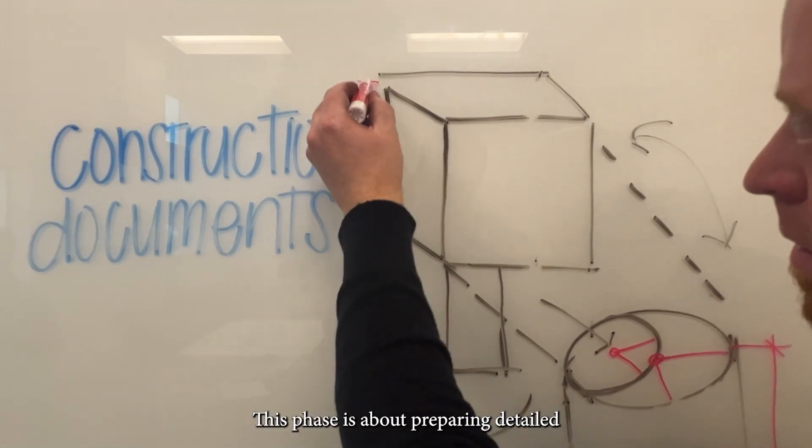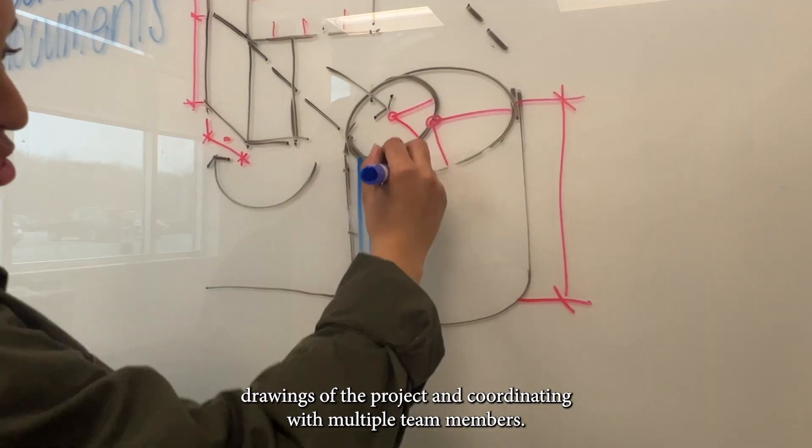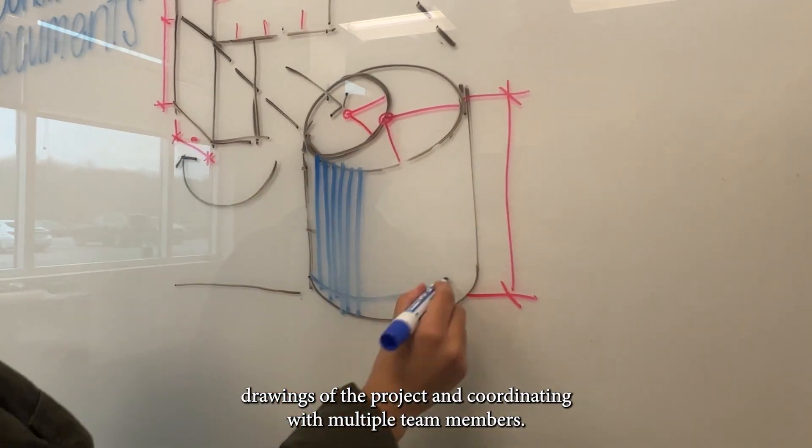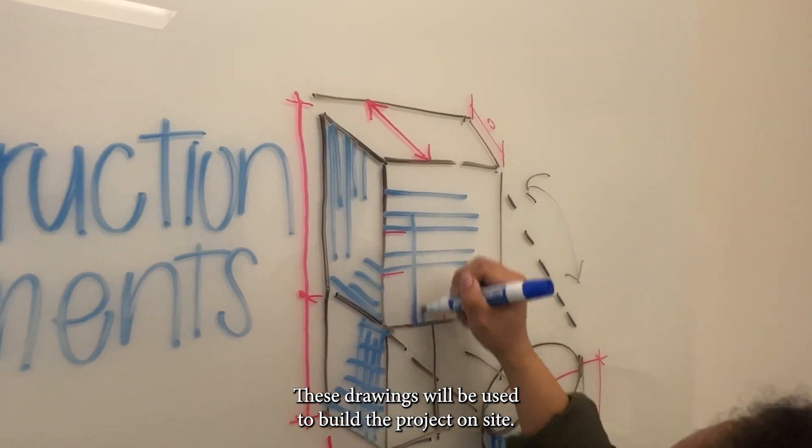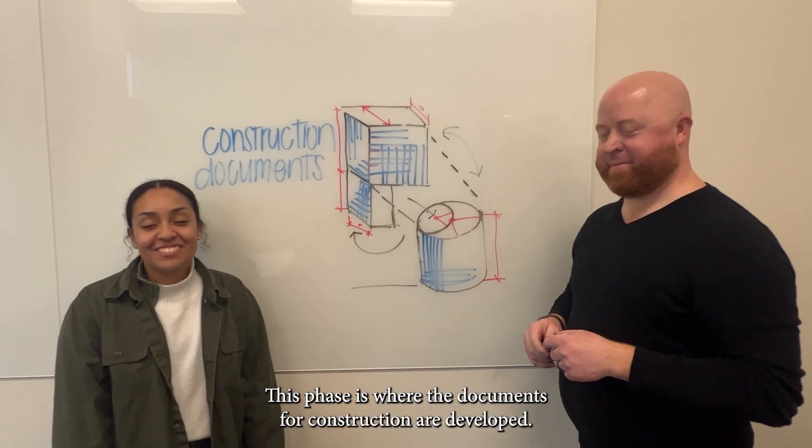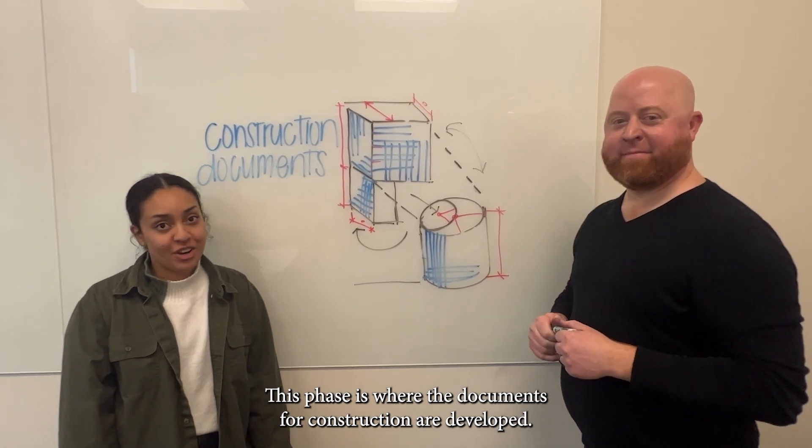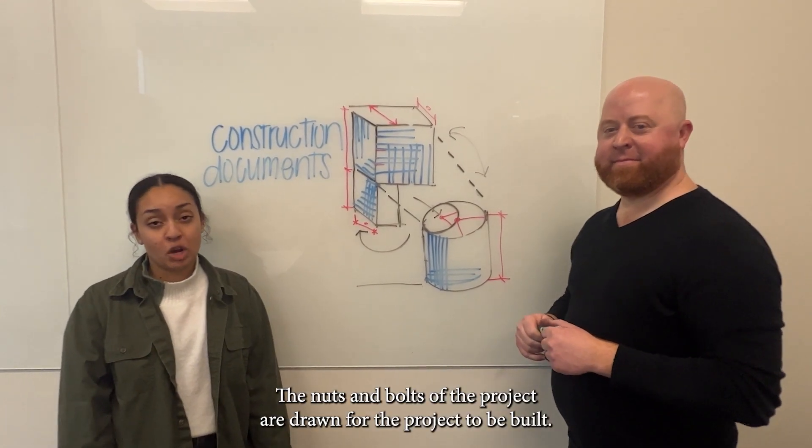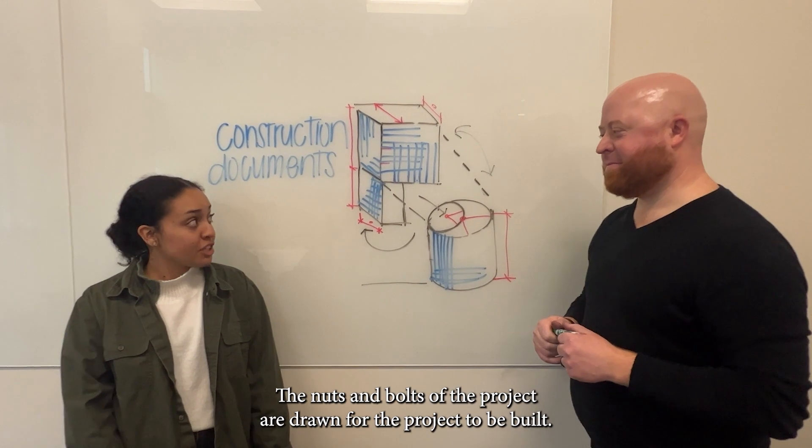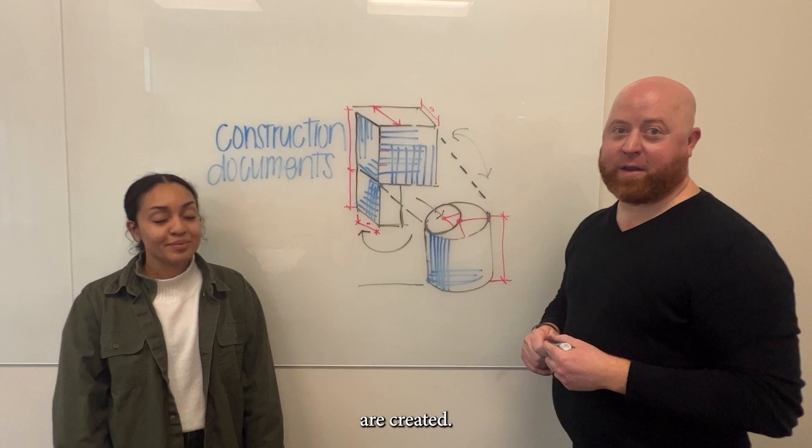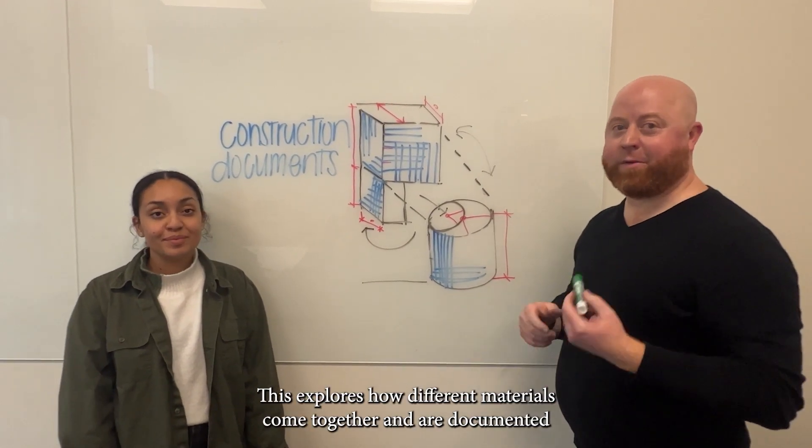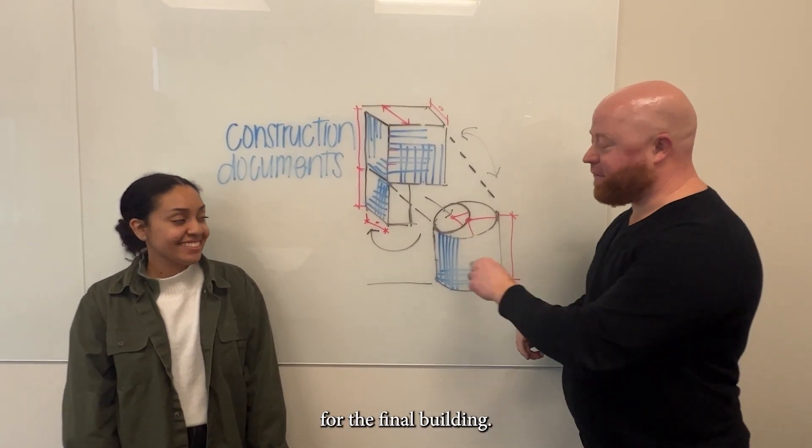This phase is about preparing detailed drawings of the project and coordinating with multiple team members. These drawings will be used to build the project on site. This phase is where the documents for construction are developed. The nuts and bolts of the project are drawn for the project to be built. This is also the stage where the details of the project are created, exploring how different materials come together and are documented for the final building.